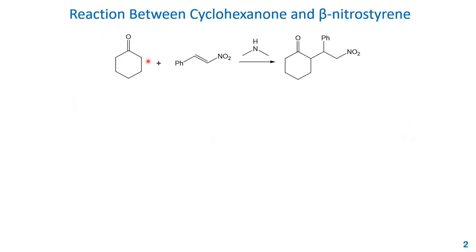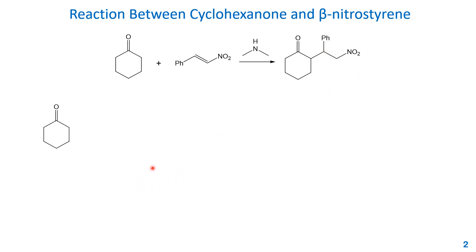This is a ketone — cyclohexanone — as the Michael donor; it can form an enolate. This is the Michael acceptor: not a very classic Michael acceptor, as it has a nitro group here, but you can see it's similar to an alpha-beta unsaturated carbonyl. The base used here is an amine. The product will also form a new carbon-carbon bond.